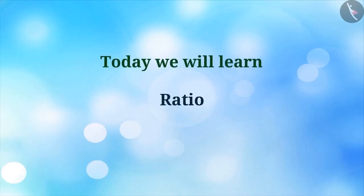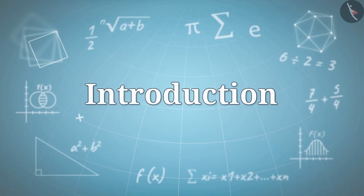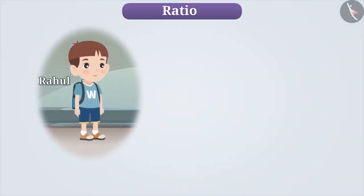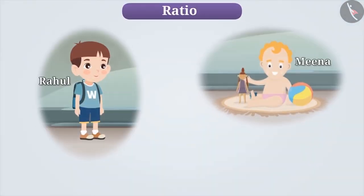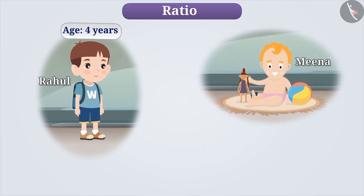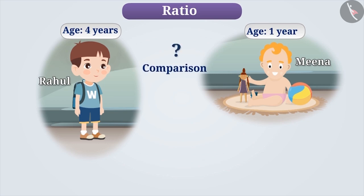Today we will learn about Ratio. This is Rahul and she is his sister Meena. Rahul's age is 4 years while Meena's age is 1 year. If we have to compare their ages, then how are we going to do this?